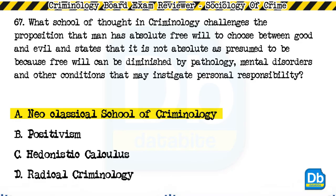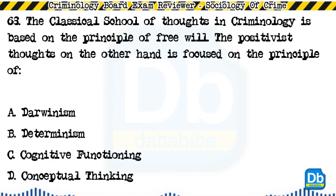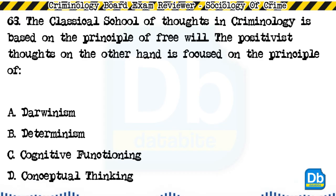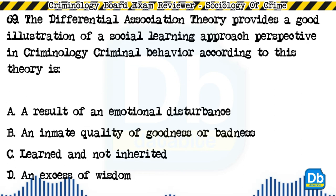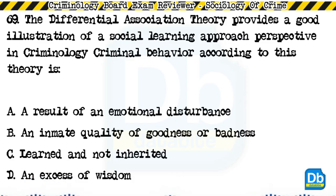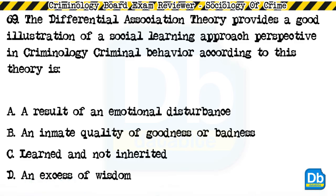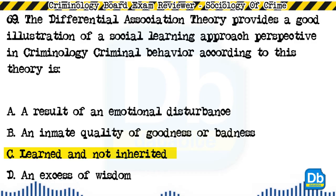Question 68: The classical school of thought in criminology is based on the principle of free will. The positivist school, on the other hand, is focused on the principle of: a) Darwinism, b) determinism, c) cognitive functioning, d) conceptual thinking. The answer is B, determinism. Question 69: The differential association theory provides a good illustration of a social learning approach in criminology. Criminal behavior, according to this theory, is: a) a result of emotional disturbance, b) an innate quality of goodness or badness, c) learned and not inherited, d) an excess of wisdom. The answer is C, learned and not inherited.